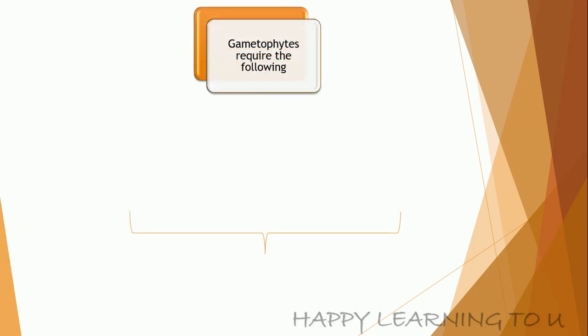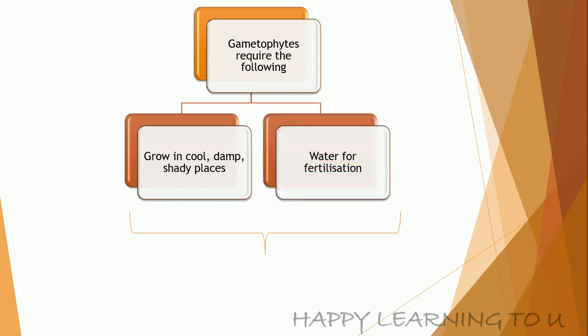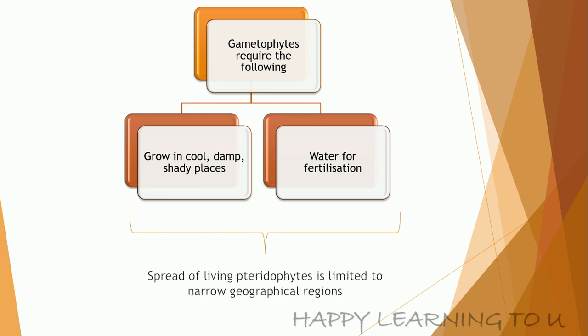The gametophyte requires cool, damp, and shady places to grow, and water for fertilization. Because of these conditions required for its growth, the spread of a living pteridophyte is limited to narrow geographical regions.